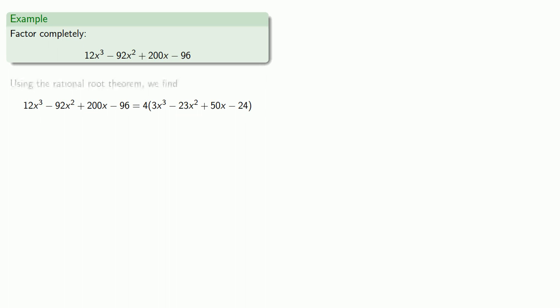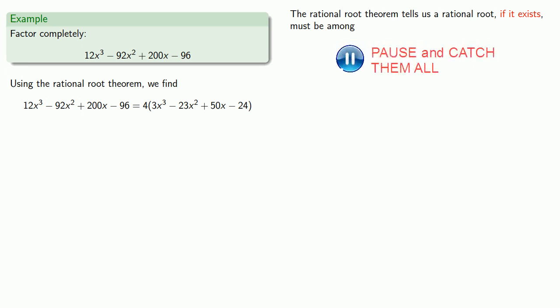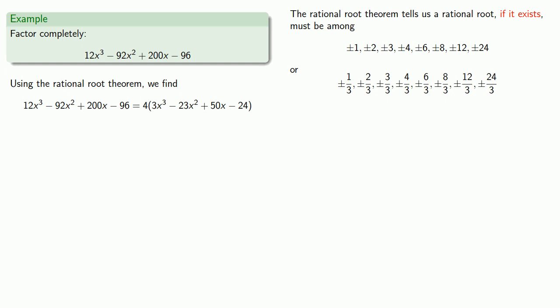So now we'll use our rational root theorem. The rational root theorem tells us that a rational root, if it exists, must be among a rather long list of possibilities. And unfortunately, there's nothing we can do but to try every single possibility until we find a root.